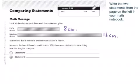The first thing I want you to do is take a look at this math message. It says, look at the ribbons and then read the statement given. Eve's ribbon and Maxine's ribbon. Statement: Eve's ribbon is shorter than Maxine's ribbon. Then it tells you to measure the two ribbons in centimeters and write two more statements describing how the lengths compare.